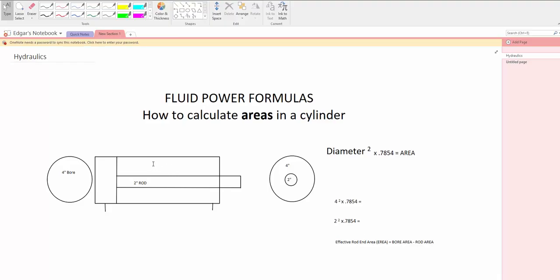And that would be the area which is around the rod. You need to calculate the area of the rod and later on you need to subtract that area from the bore area.